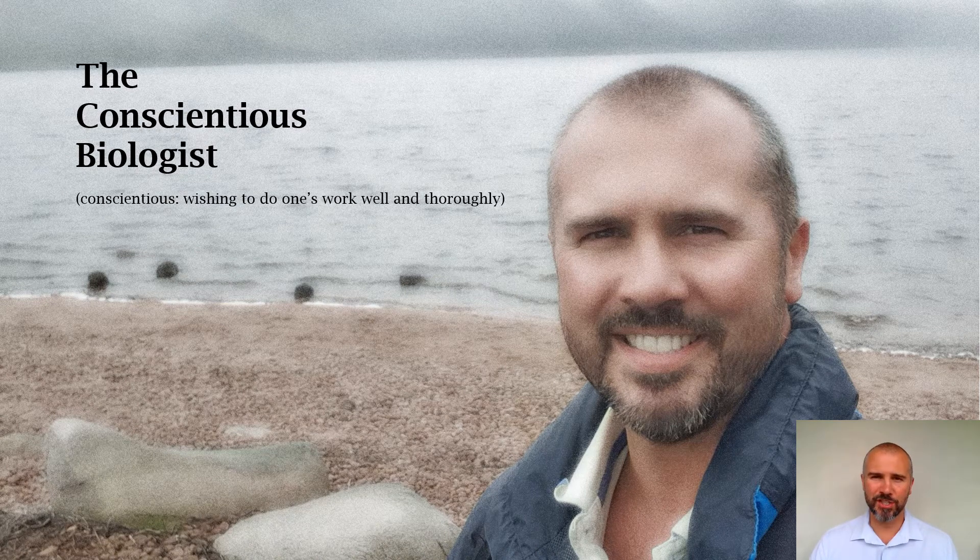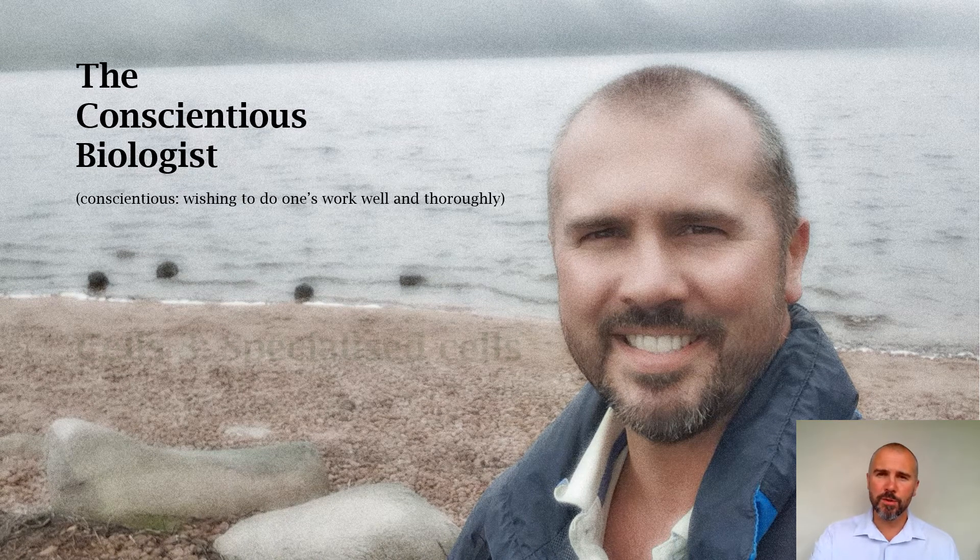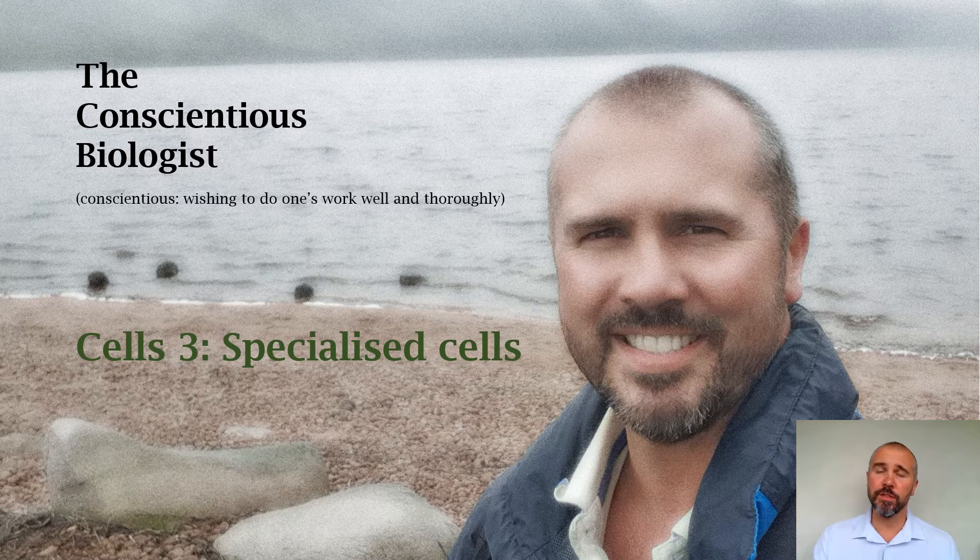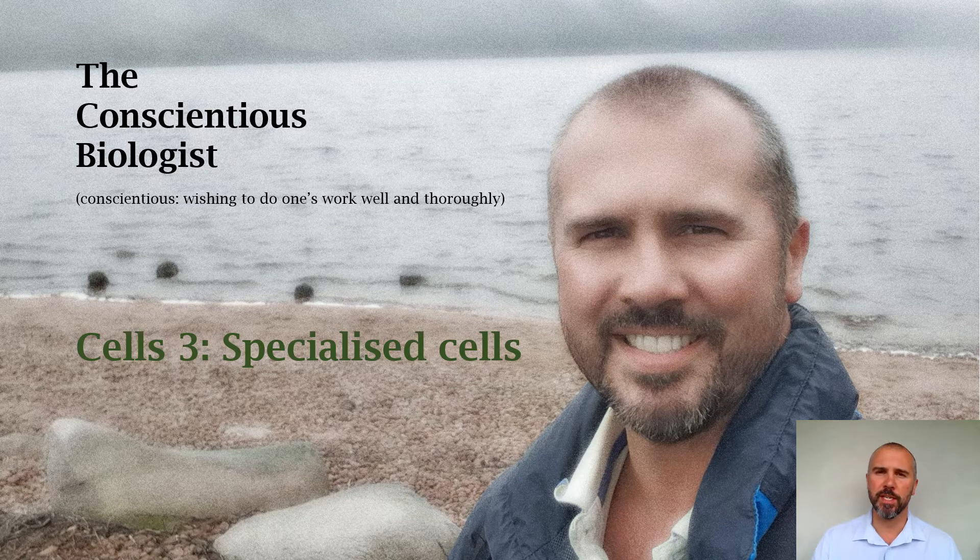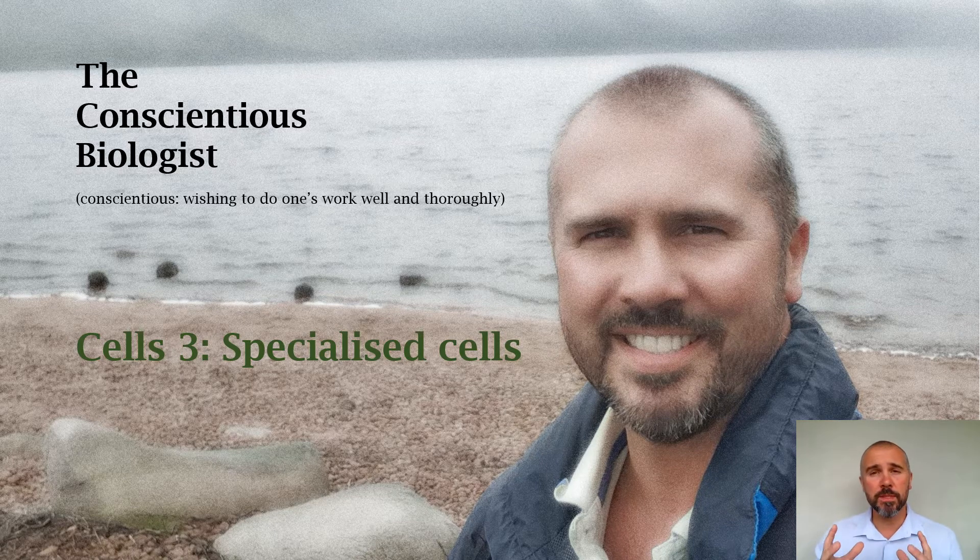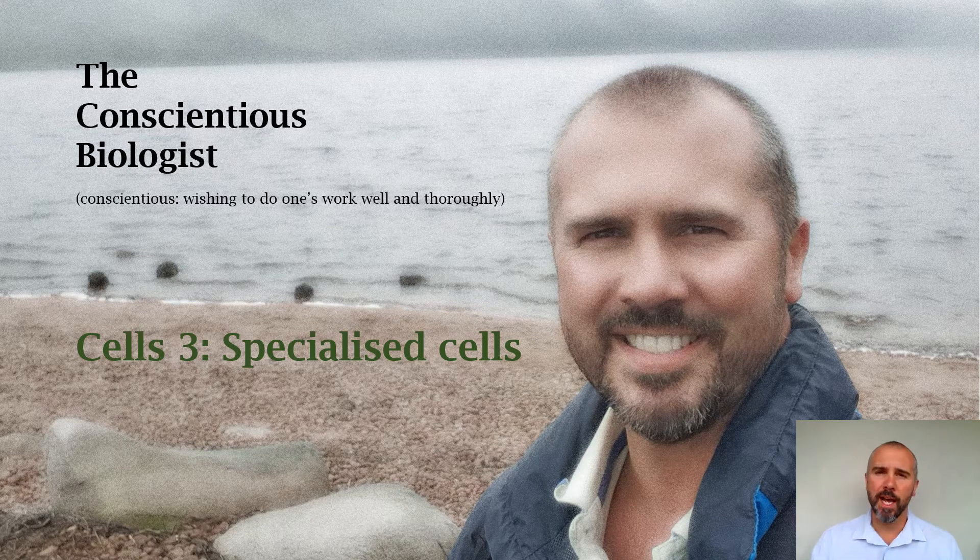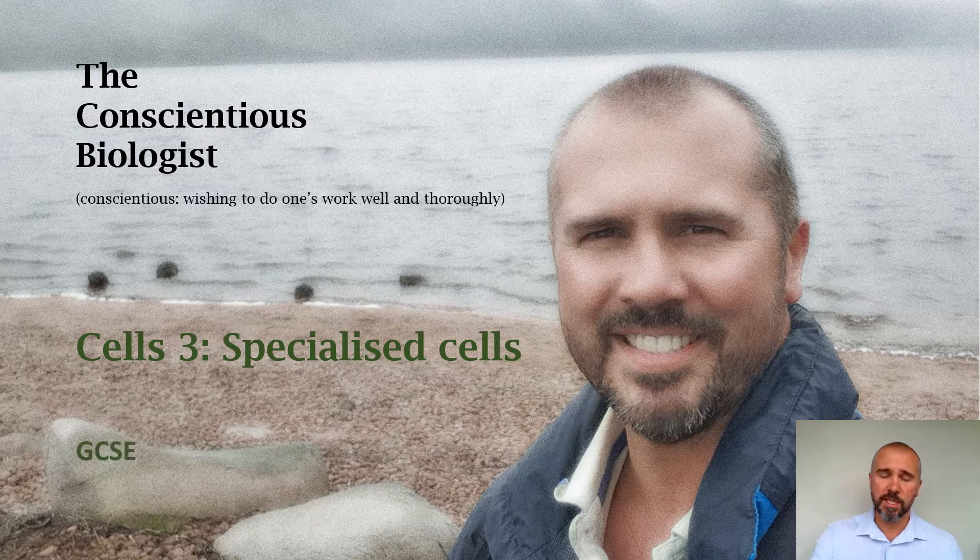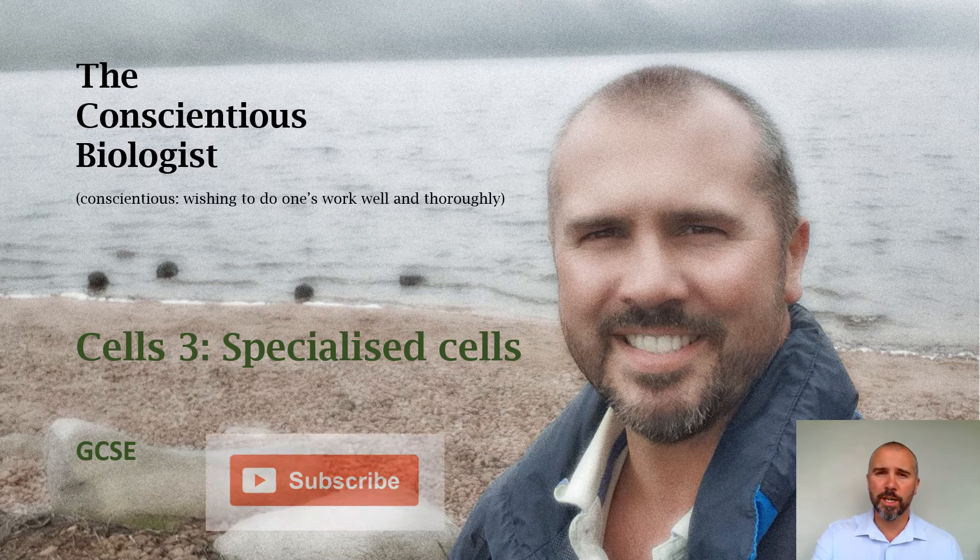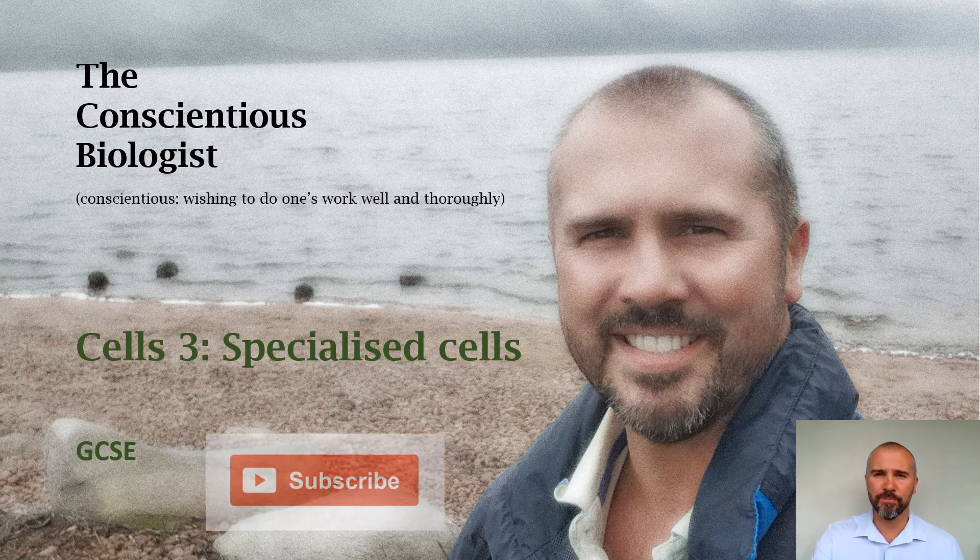Hello, welcome to another video from the Conscientious Biologist Ben Gallagher. This one follows directly on from cells two which was on differentiation and it now looks at how those differentiated cells have become specialized, what those specializations are, and we'll look at some of the key examples in both animals and plants. This is suitable for GCSE level and if you haven't done so already please do subscribe to my channel, thank you.